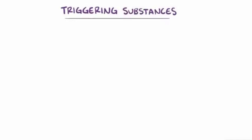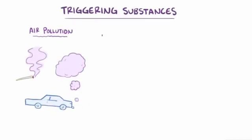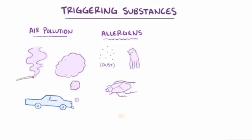The triggering substance that leads to an asthma attack can differ from person to person, but some common ones include air pollution like cigarette smoke and car exhaust, as well as allergens like dust, pet dander, cockroaches, and mold.